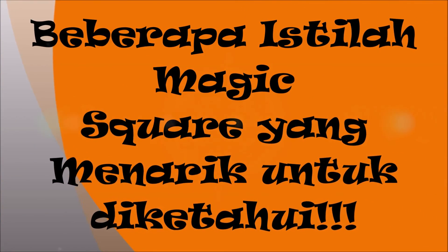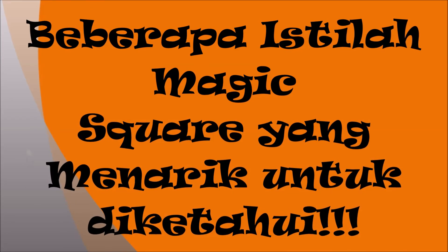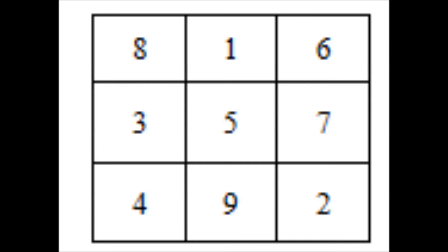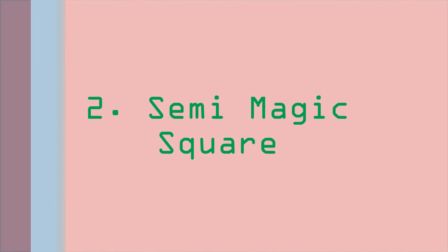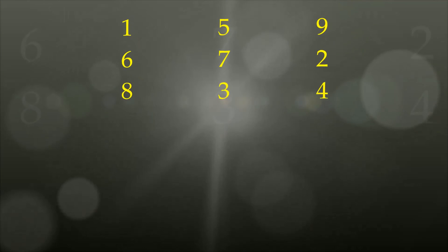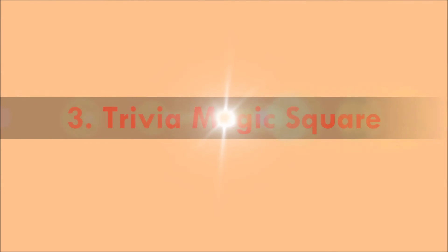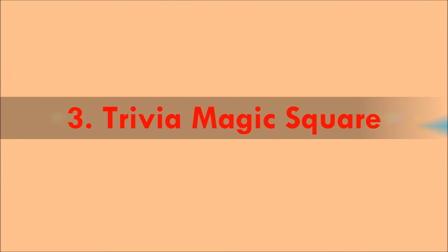Menurut sejarahnya, persegi ajaib telah dikenal sejak sebelum Kaisar Yu, 2200 sebelum masehi. Beberapa istilah magic square yang menarik untuk diketahui: Normal magic square adalah persegi yang dibentuk dengan menempatkan angka 1 hingga n kuadrat dan tidak ada bilangan yang sama. Semi magic square hanya mengharuskan angka pada baris dan kolom berjumlah sama, namun diagonalnya tidak perlu sama.